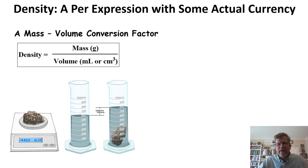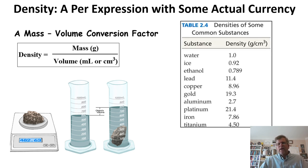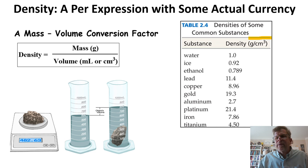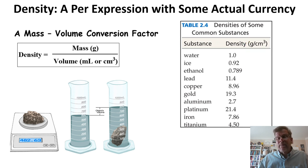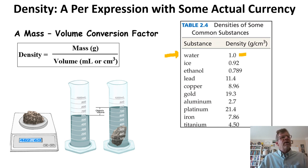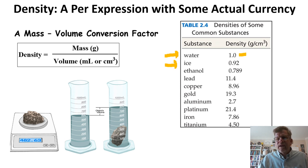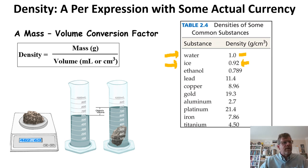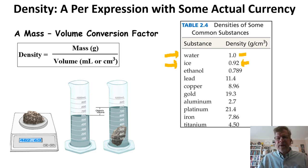Density is a physical property of a pure substance. Here are some representative densities of common substances, given in grams per cubic centimeter — the classic measurement, interchangeable with grams per milliliter. Water has a density of one gram per cubic centimeter. Sometimes different phases of the same pure substance have different densities. For instance, solid water — ice — is only 0.92 grams per cubic centimeter. This is why ice cubes float in a drink: they're less dense than the liquid they're in.